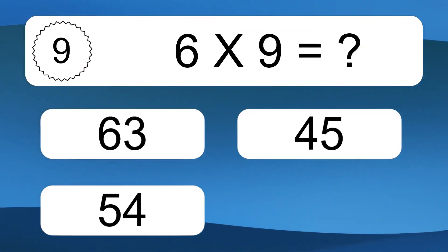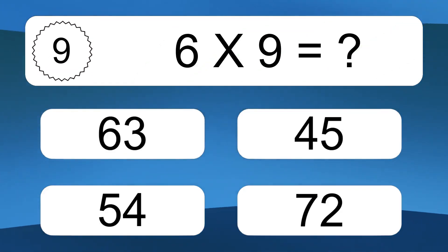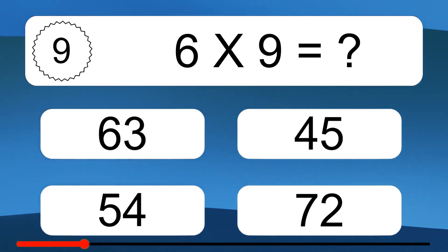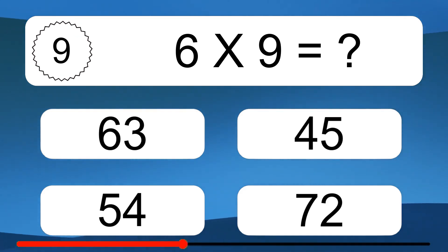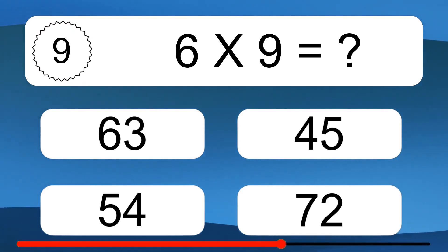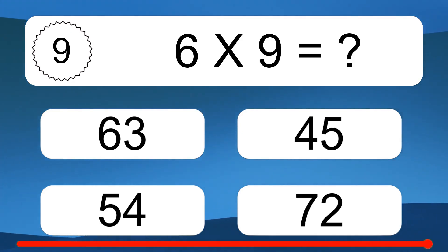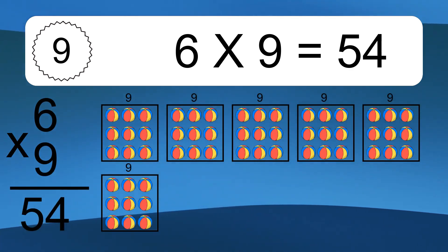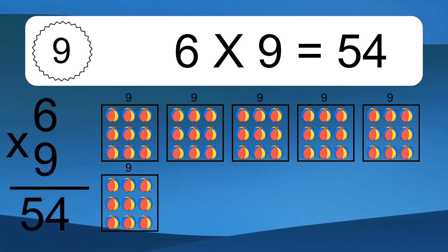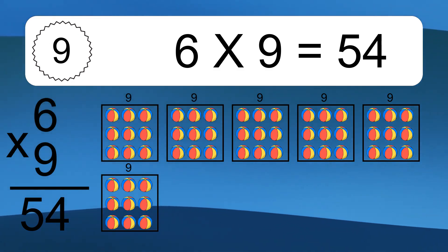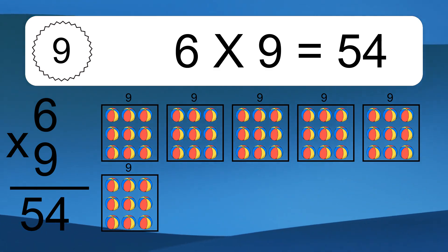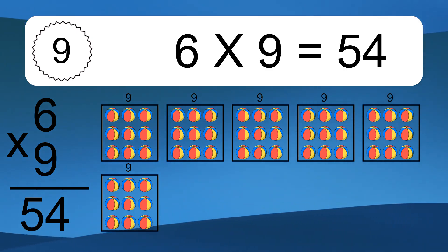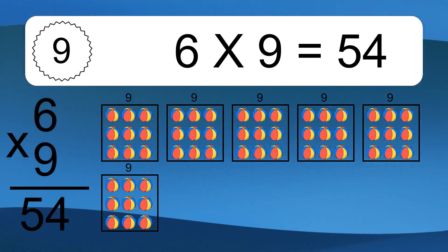6 times 9 equals what? 6 times 9 equals 54. We have 6 boxes, and each box has 9 colorful balls inside. If you count all the balls in all the boxes together, you will have 6 times 9 balls. This equals 54 balls.